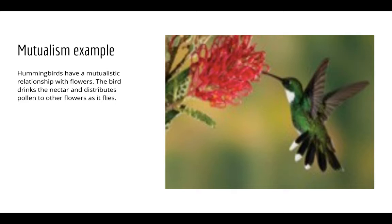The hummingbird's benefit is obtaining the nectar. The benefit for the flower is that when the hummingbird comes to the plant, it grabs some pollen along with the nectar, then flies to another flower and distributes that pollen. So both organisms are gaining a benefit.